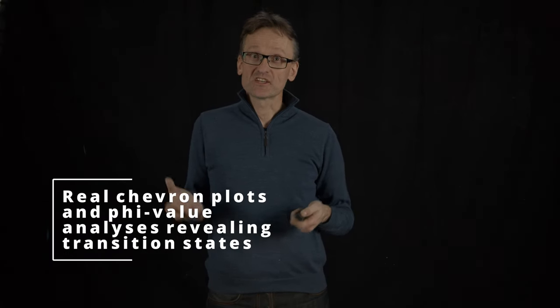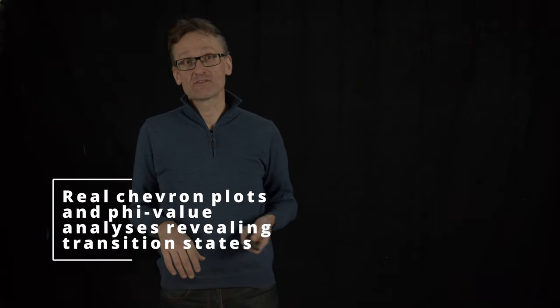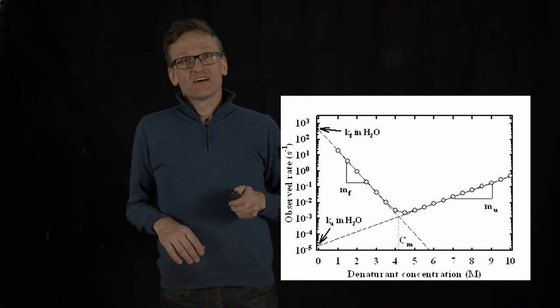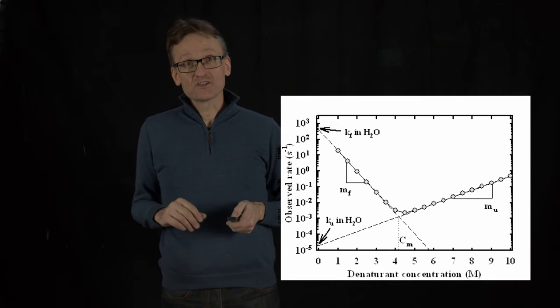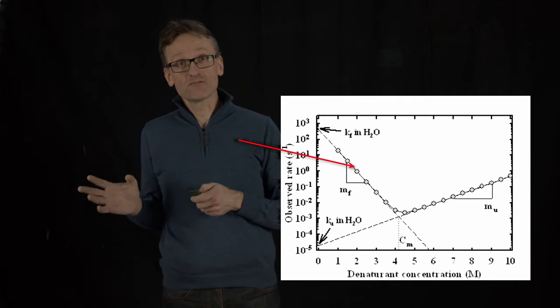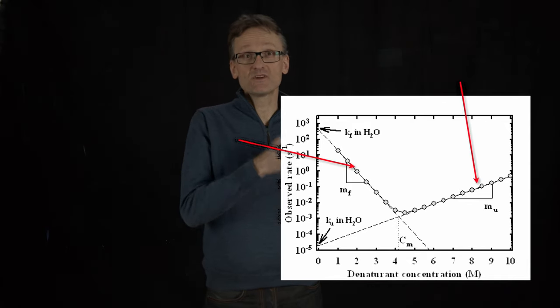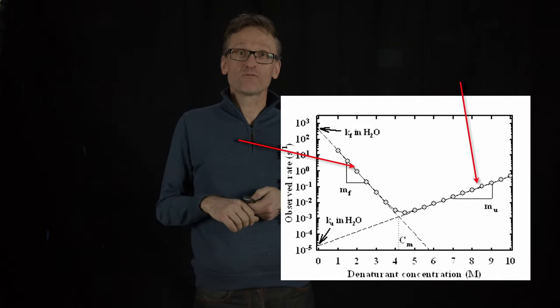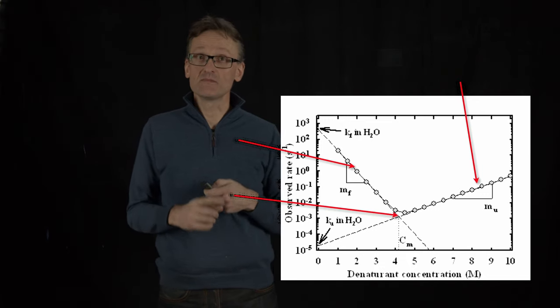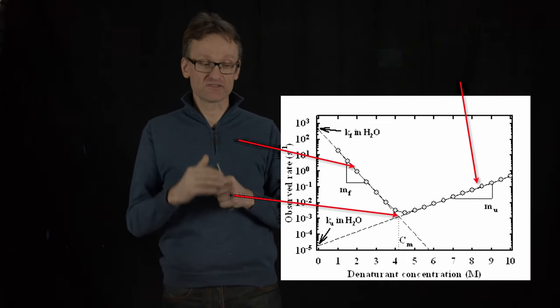Let me show you a real Chevron plot instead of my illustration. They would look roughly like this. Again, we have three important regions: the region on the left where folding dominates, the region on the right where unfolding dominates, and the midpoint where we measure these shifts on the curves.